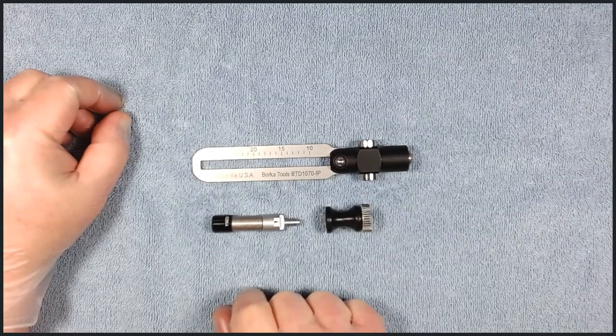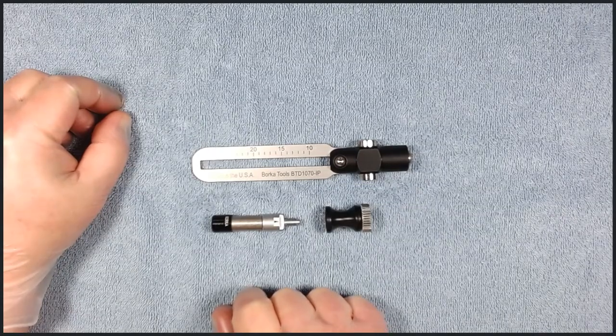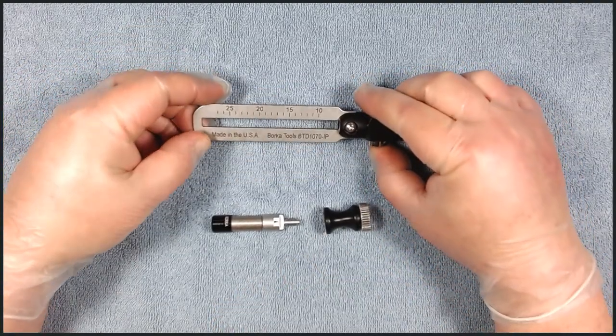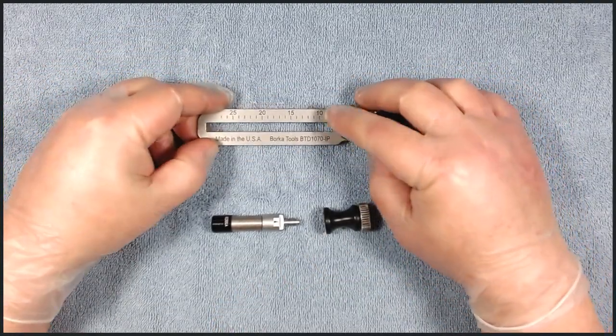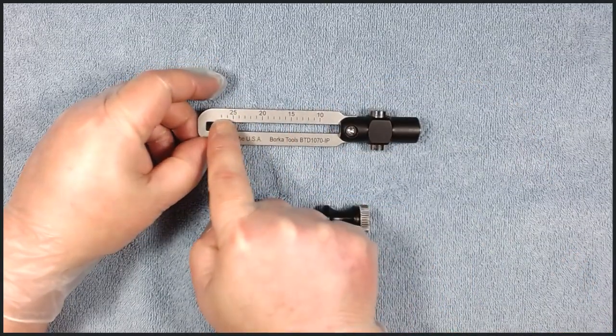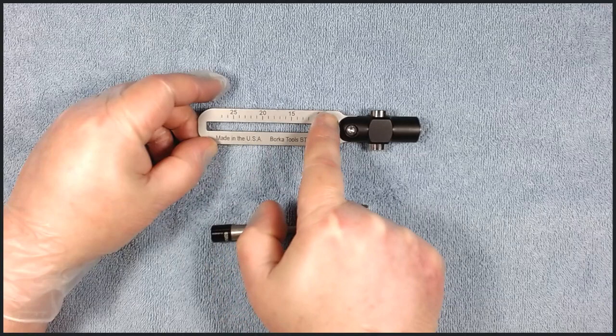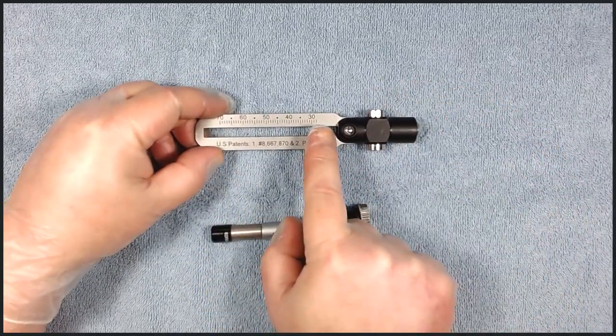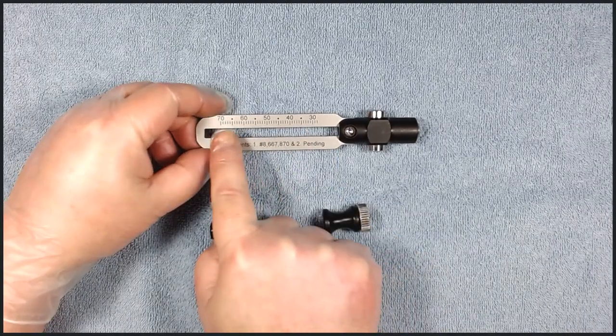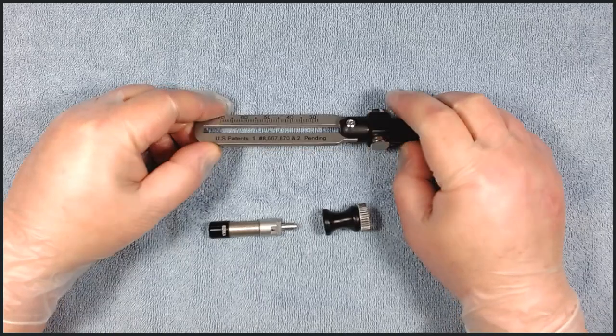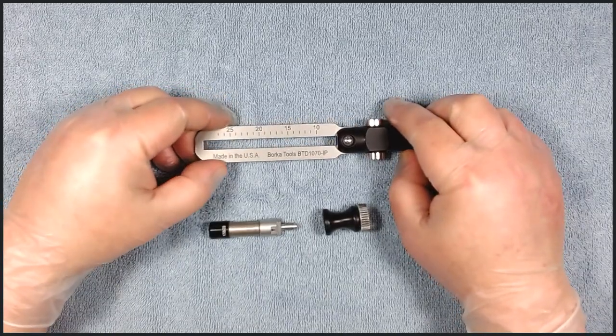Step number one, let's set up the torque driver. Torque driver has two scales from 10 to 27 inch pounds on one side of the driver arm and from 28 to 70 inch pounds on the other side. In fact, it's two torque drivers in one.